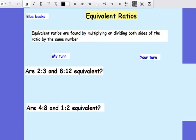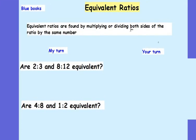In your dark blue books, Year 8, can you write me the title, Equivalent Ratios? And underneath, can you write the sentence: Equivalent Ratios are found by multiplying or dividing both sides of the ratio by the same number. Pause the video for a couple of minutes and write that in your dark blue books now.